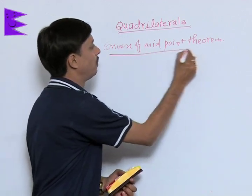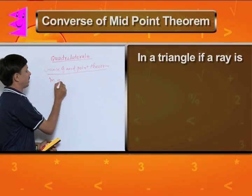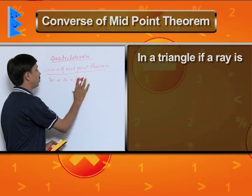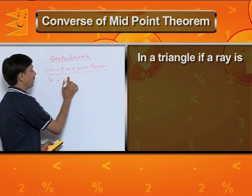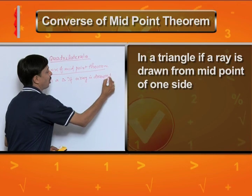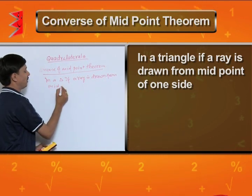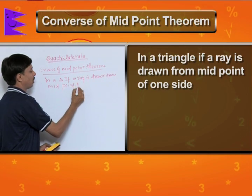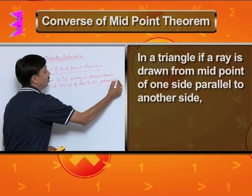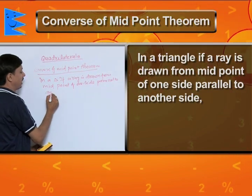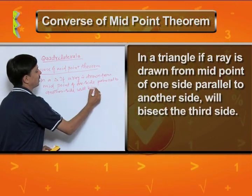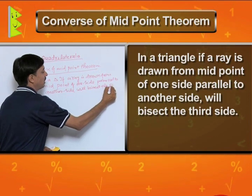But its converse will be that in a triangle, if a ray is drawn from the midpoint of one side parallel to another side, it will bisect the third side.